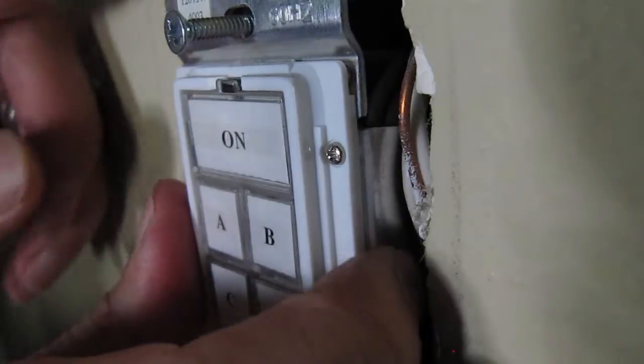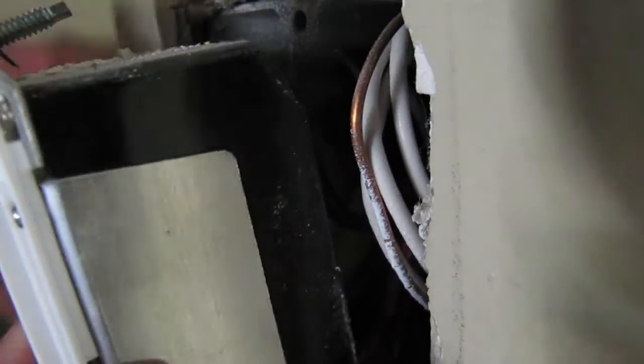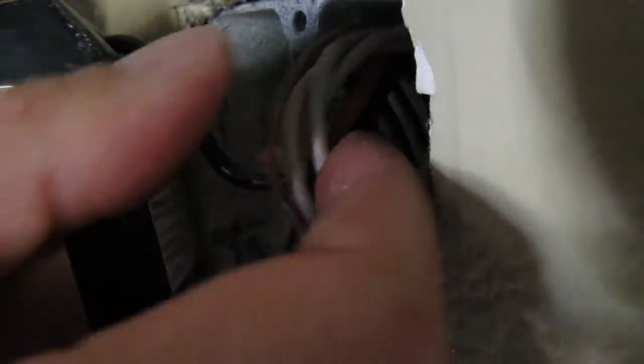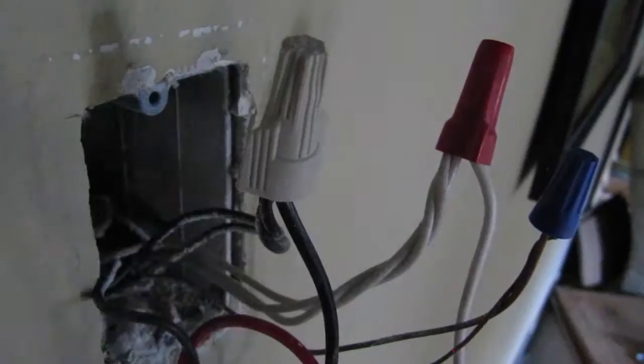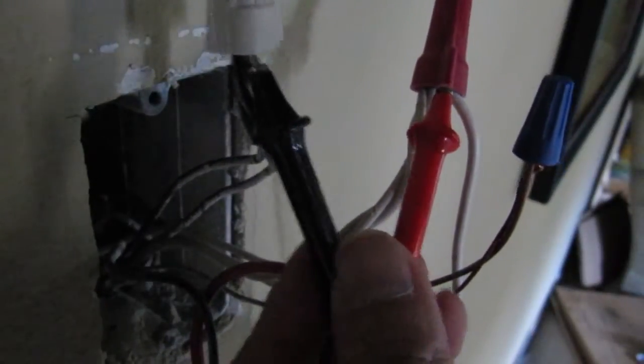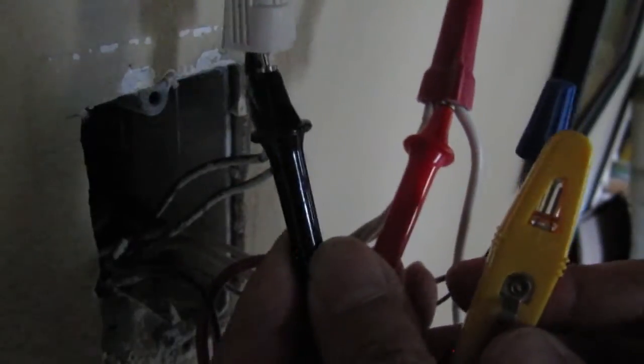Now I'll slide the old switch off. Before I disconnect the wire nuts, I'm going to make sure the power is off to this switch. I know it's definitely off so I'll start undoing the wires now.